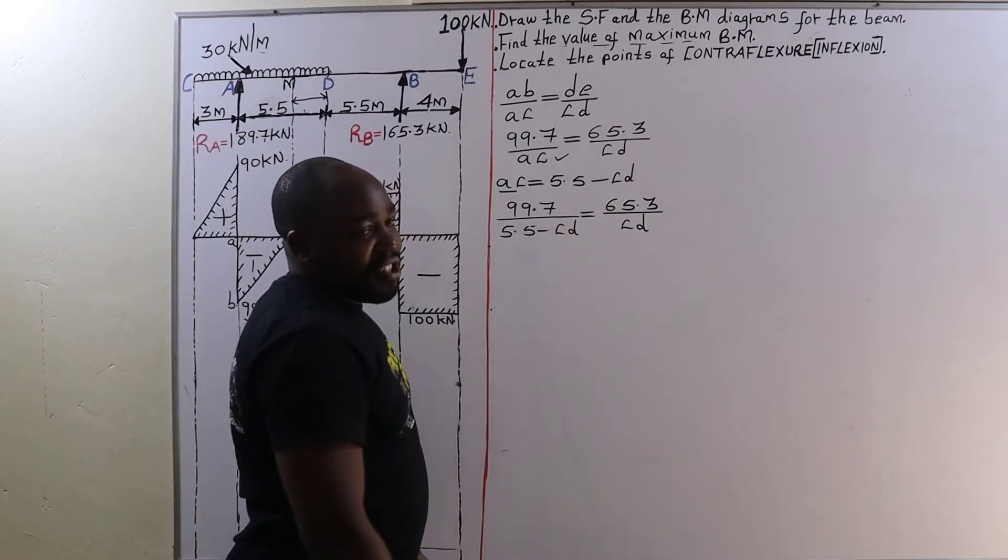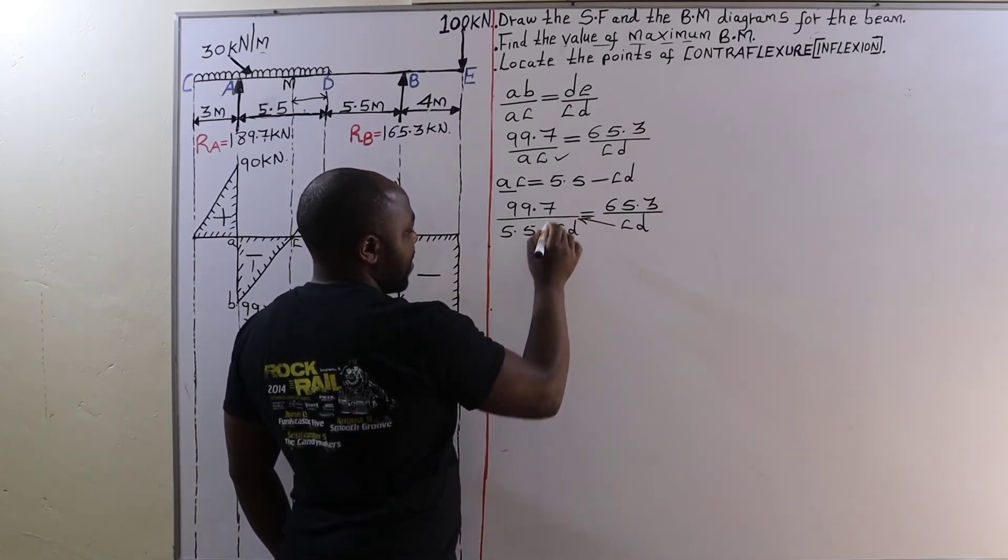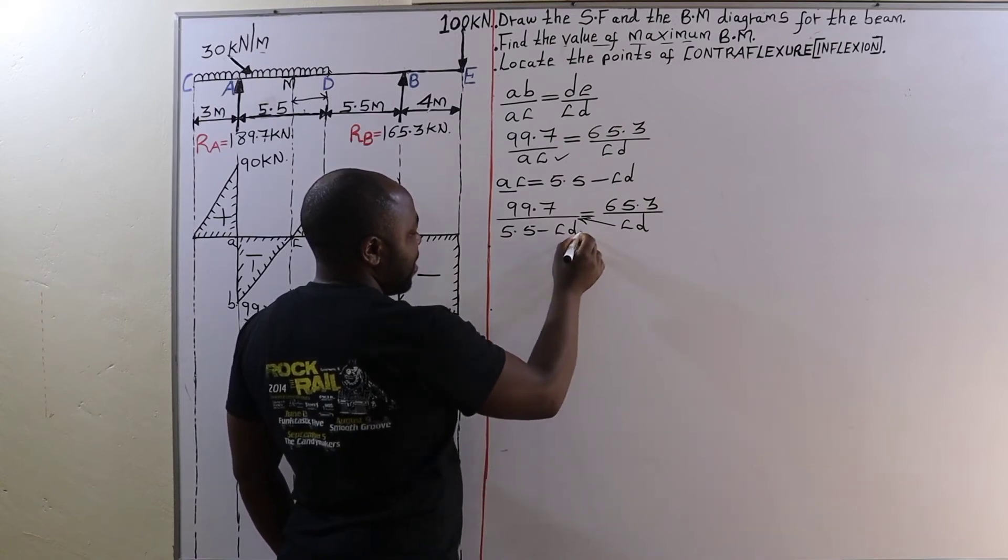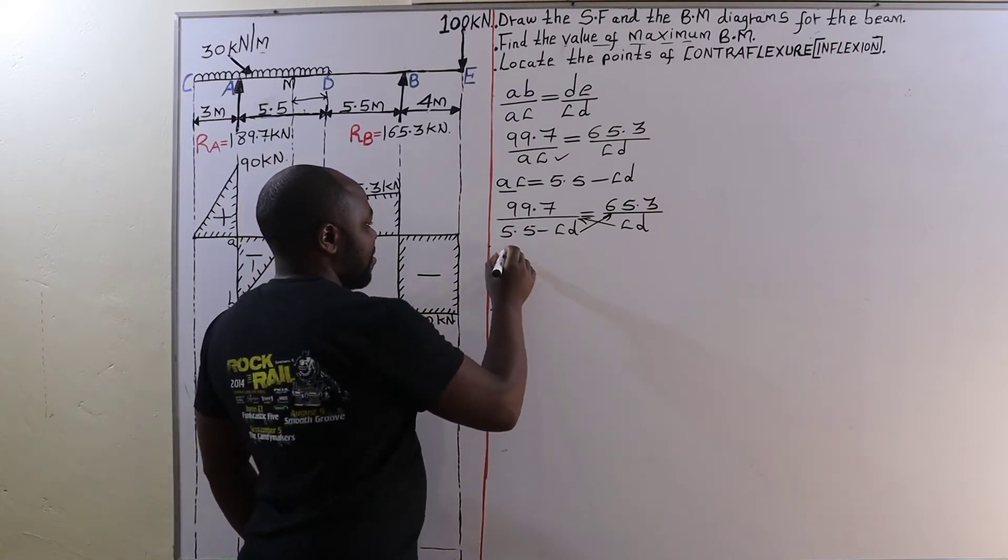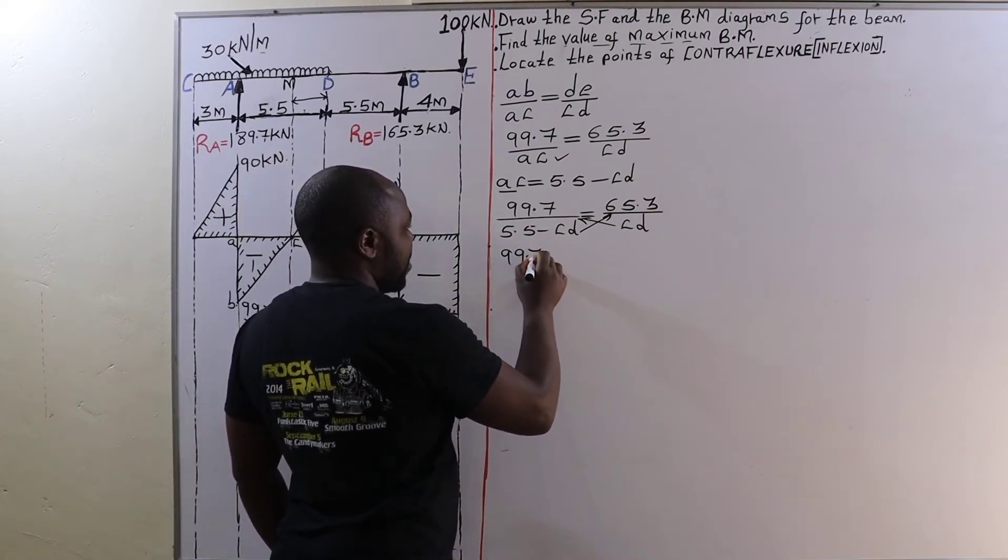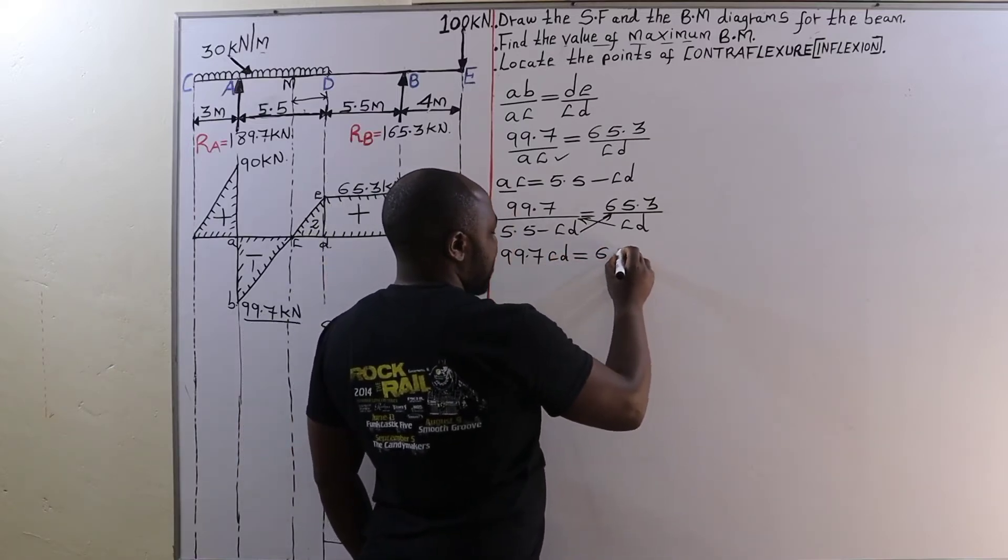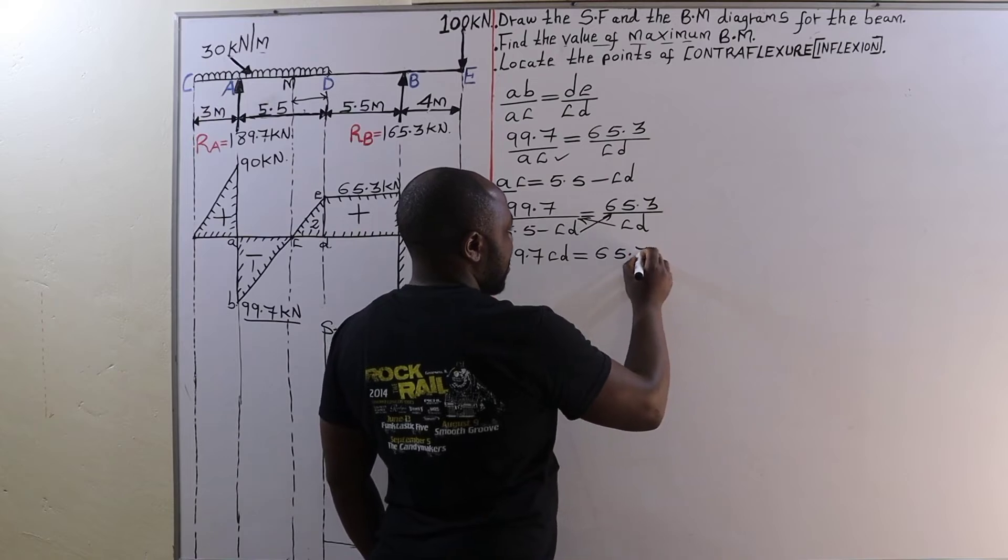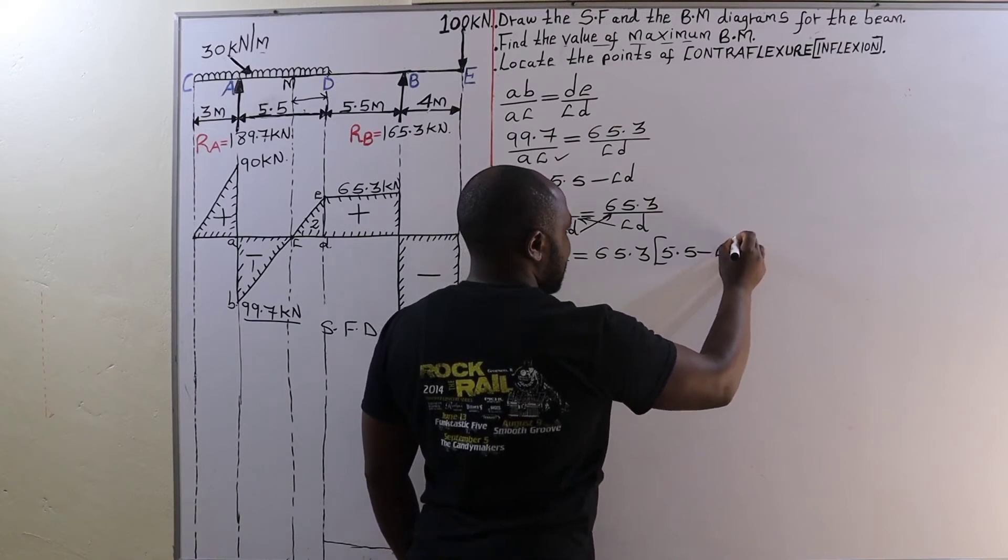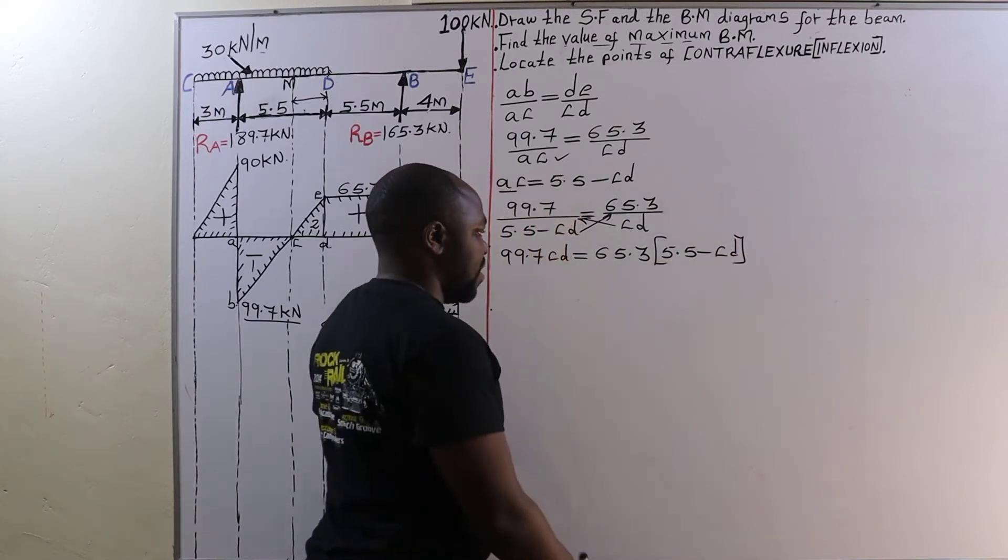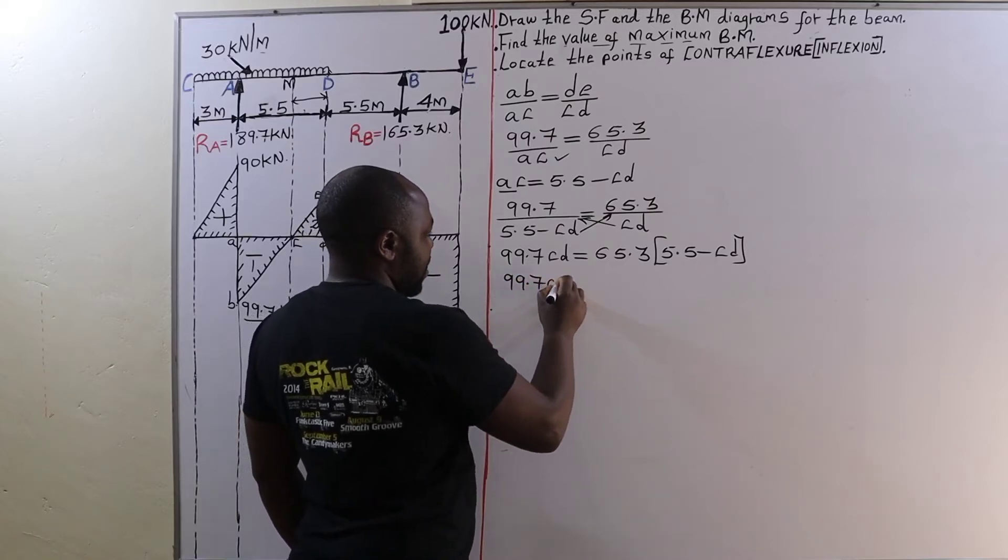Cross multiplication. At this point cross multiply this way. CD multiplied with 99.7, the other one multiplied by 65.3. So this is going to be 99.7 CD is equal to 65.3 into bracket 5.5 minus C to D.